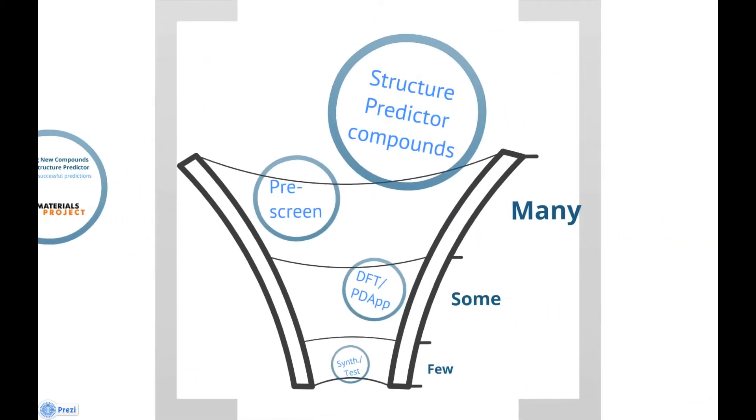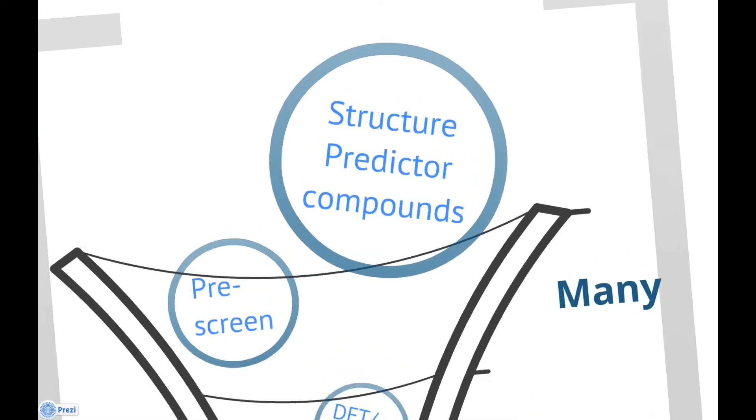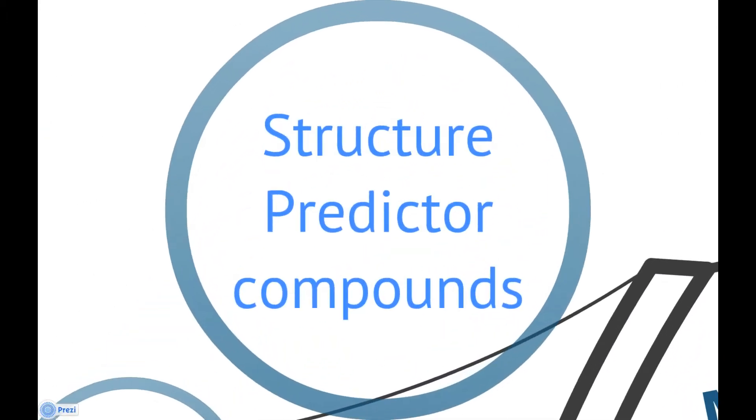In order to maximize the possibility of finding a new compound, it's important to use the Structure Predictor app within a larger workflow. The first step of the workflow is simply to get the list of predictions from the Structure Predictor app. This process was described in a previous video.